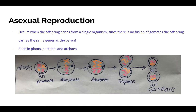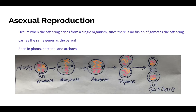Asexual reproduction, on the other hand, is when the offspring arises from a single organism. Since there is no fusion of gametes, the offspring carries the same genes as the parent. We often see asexual reproduction in plants, bacteria, and archaea. This drawing shows the process of mitosis, in which one diploid cell goes through prophase, metaphase, anaphase, telophase, and cytokinesis to create two diploid cells identical to the original cell.